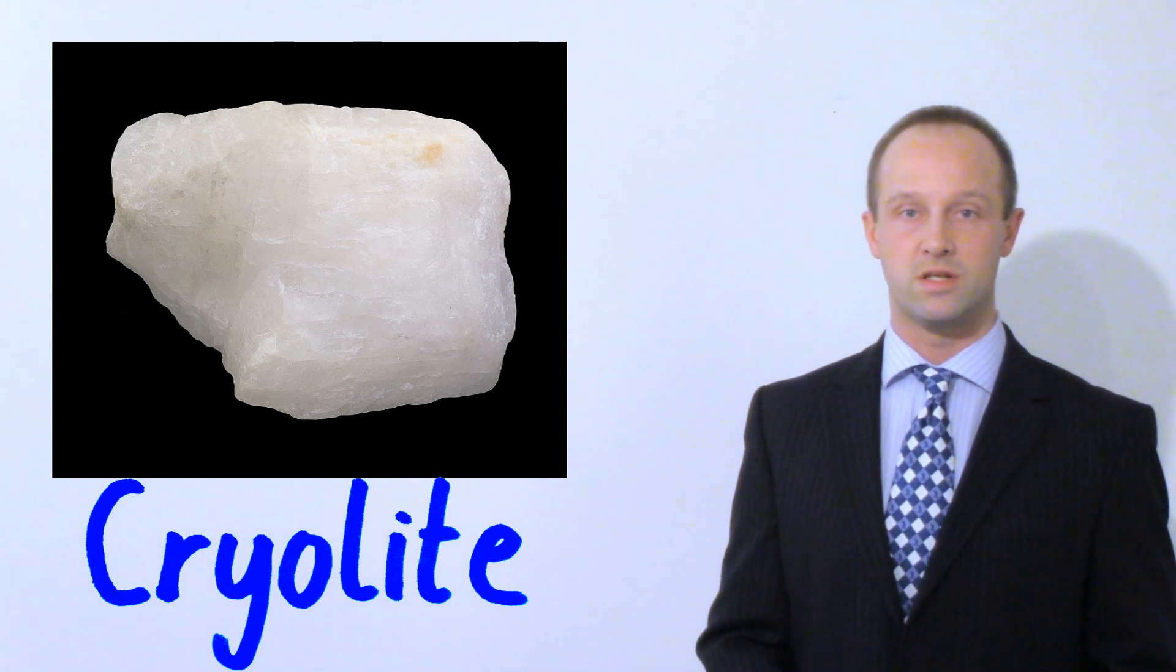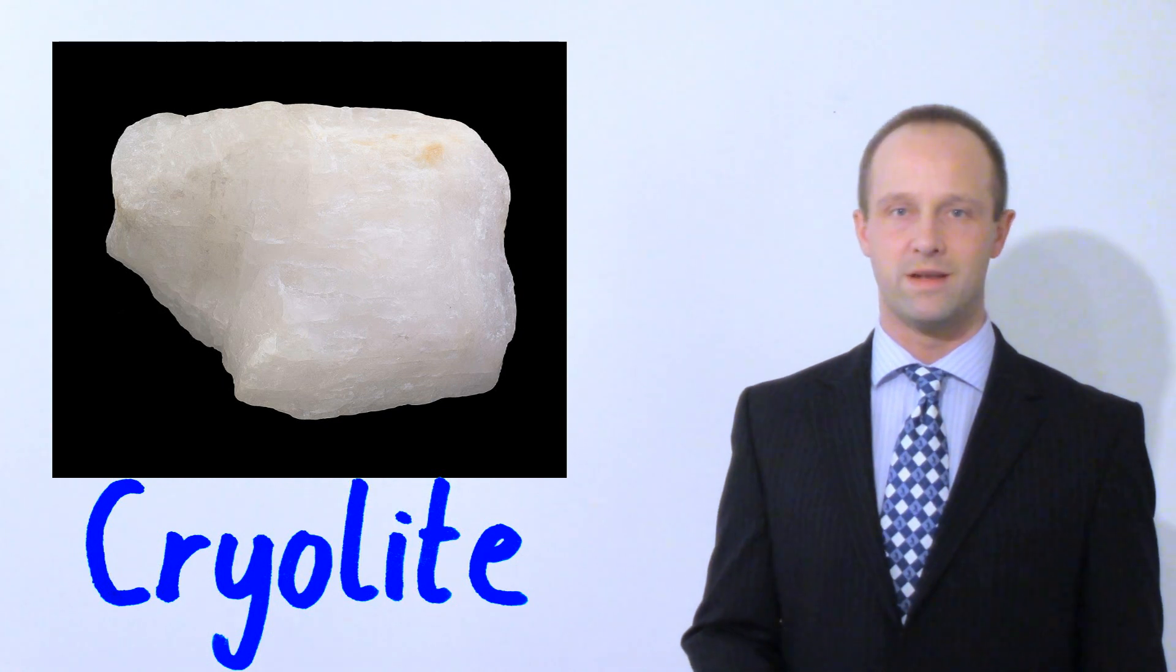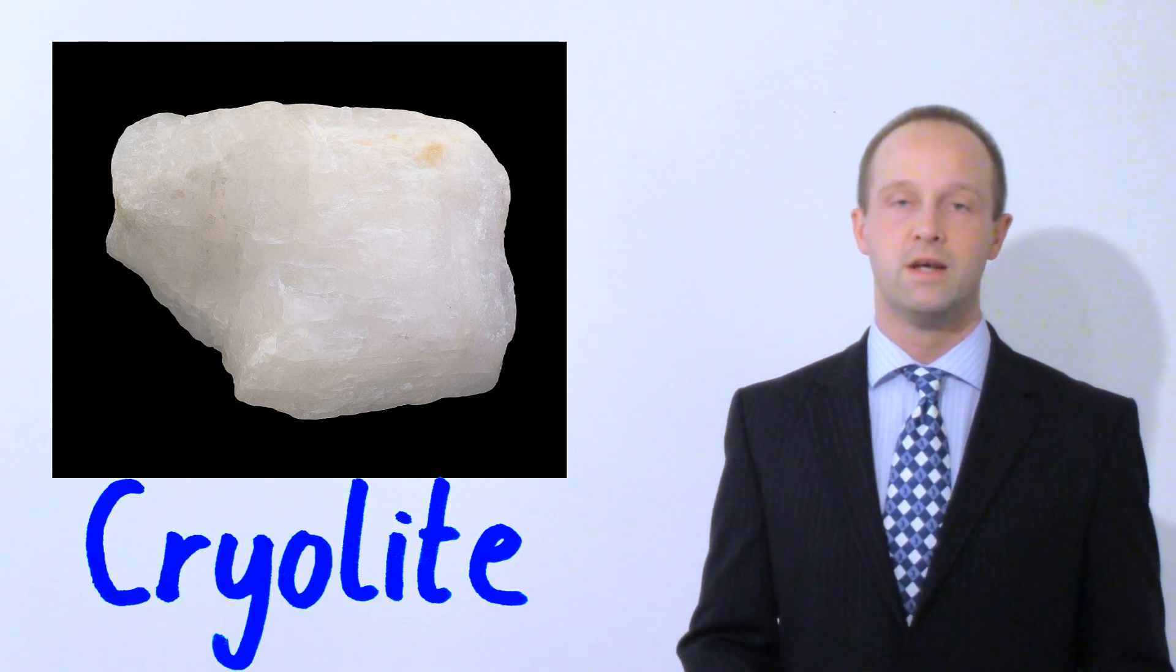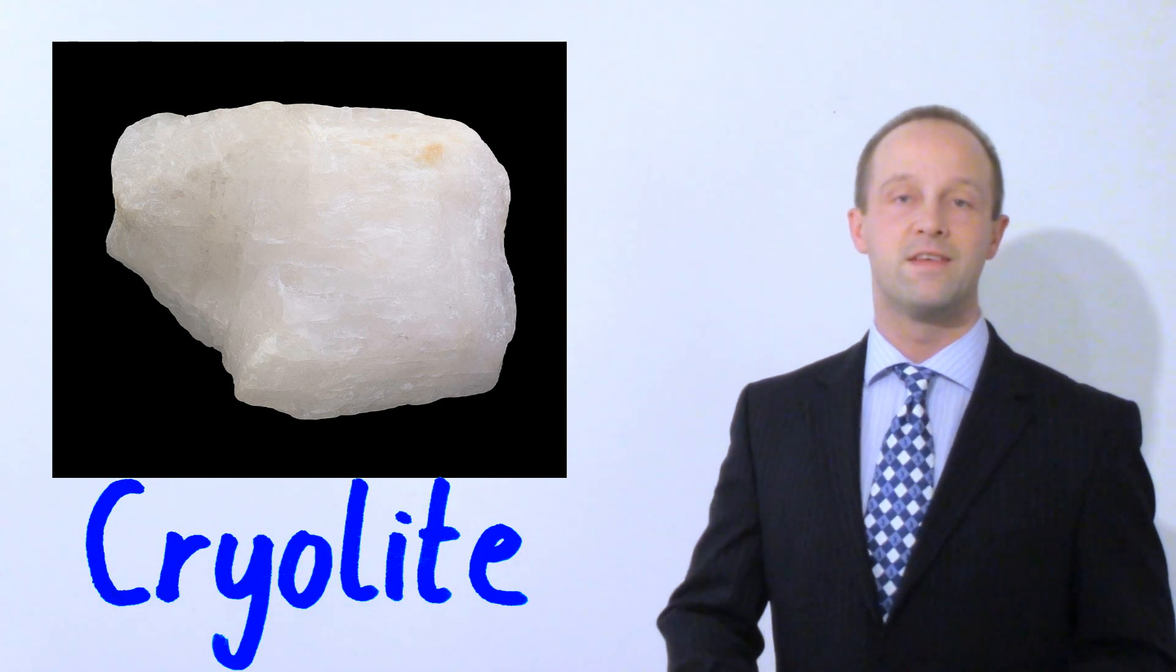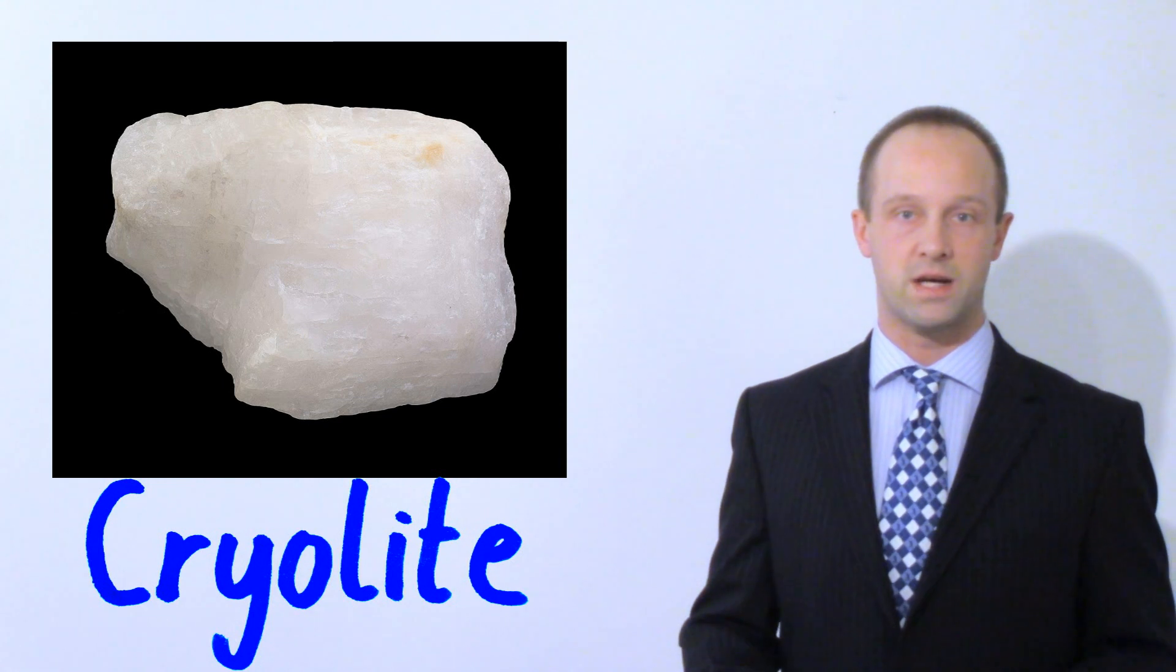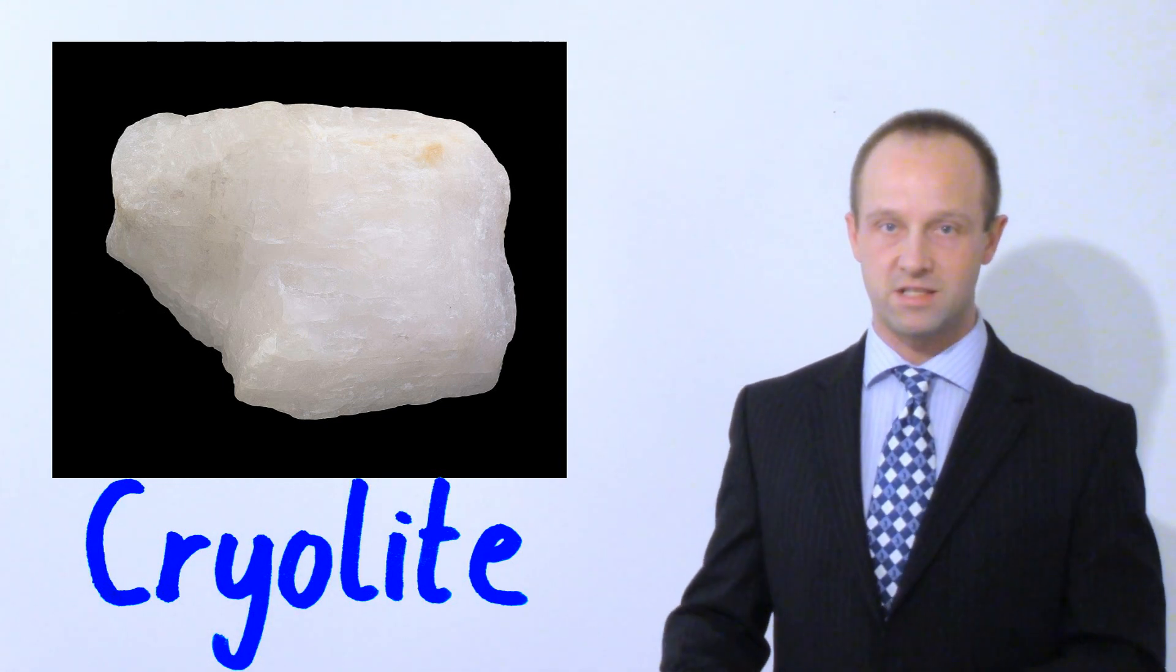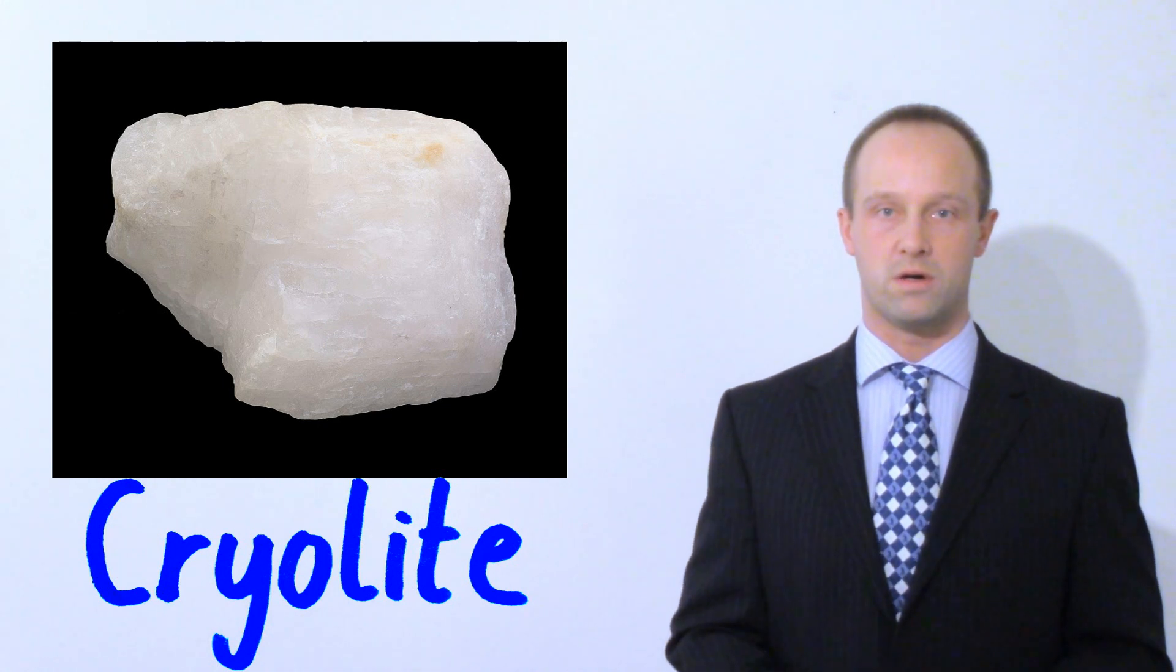Now cryolite melts at about a thousand degrees Celsius, which may seem like a very high temperature, but it's way lower than the melting point of aluminium oxide. So it's far more energy efficient to melt cryolite, and this cryolite will then dissolve the aluminium oxide out from the bauxite ore. And then we can electrolyse this liquid, the mixture of cryolite and aluminium oxide.